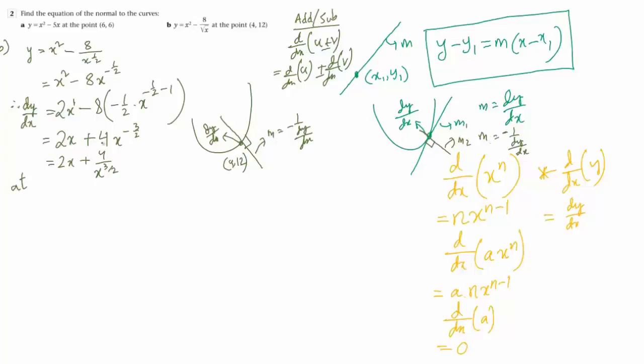So at the point x equals 4, at that point the value of x is 4. So dy/dx is 2 into 4 plus 4 divided by 4 to the power 3 by 2. And we can use indices. So 2 into 4 is 8, plus 4 divided by... Now 4 to the power 3 by 2 means 2 squared to the power 3 by 2. When you have a power over the power, you multiply the power and you get 8 plus 4 divided by 8.